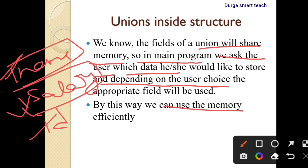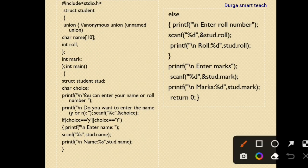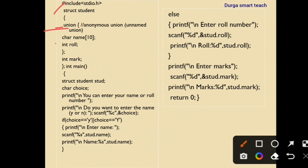So by this way we can use memory efficiently. The topic is unions inside structures. In the example program, we have the header file stdio.h, then struct student — a structure. Inside the structure we are declaring a union. This union does not have any name, so it is known as an anonymous or unnamed union. It contains char name and int roll number as union variables.